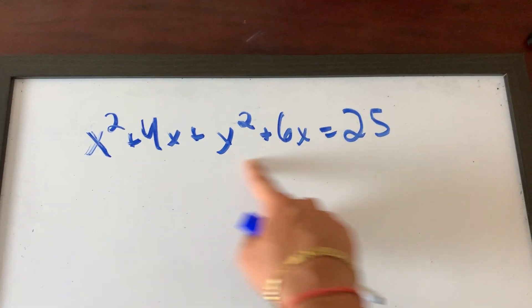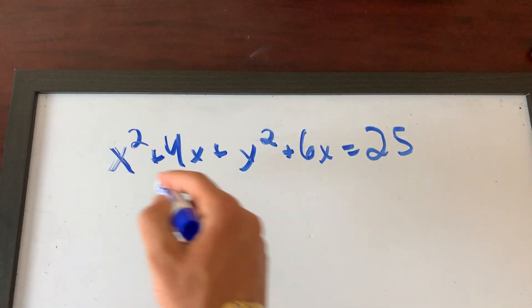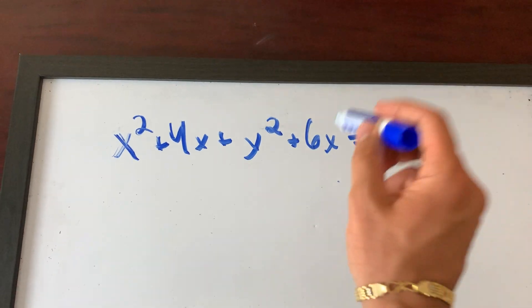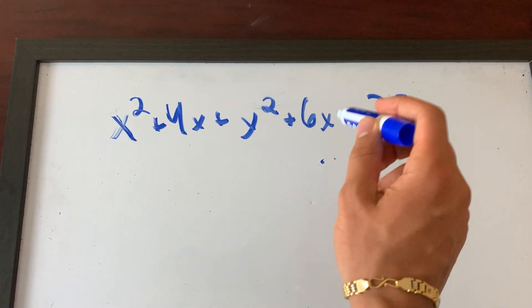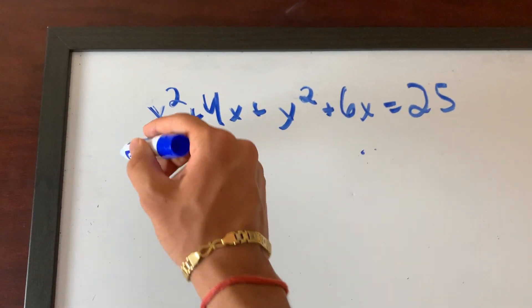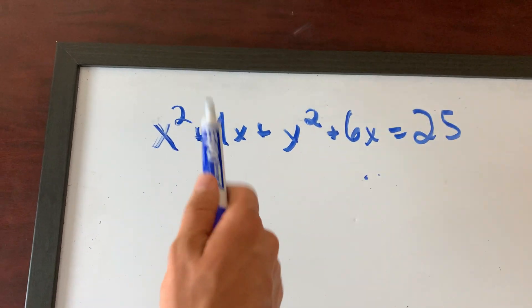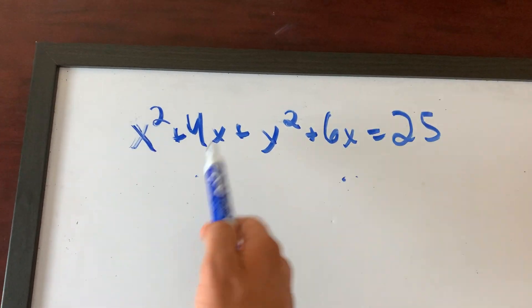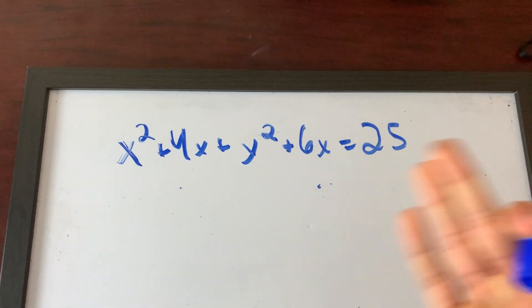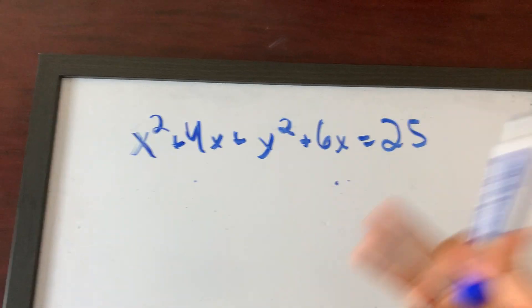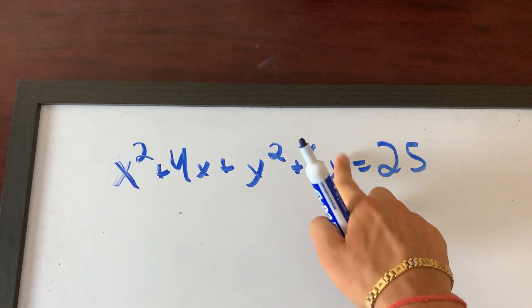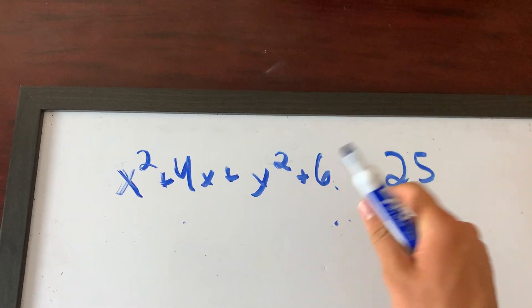What does this look like, guys? Tell me — when you see this, what does it remind you of? What PTSD does this give you? This gives you circle nightmares. This should scream circles. When you see this, you know — oh shoot, I'm about to deal with circles. And we hate circles, right? I know all you guys hate circles.